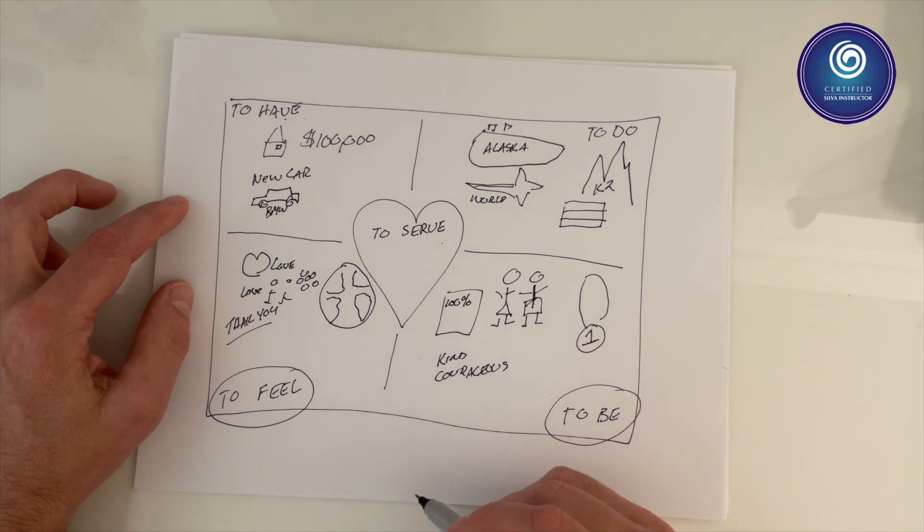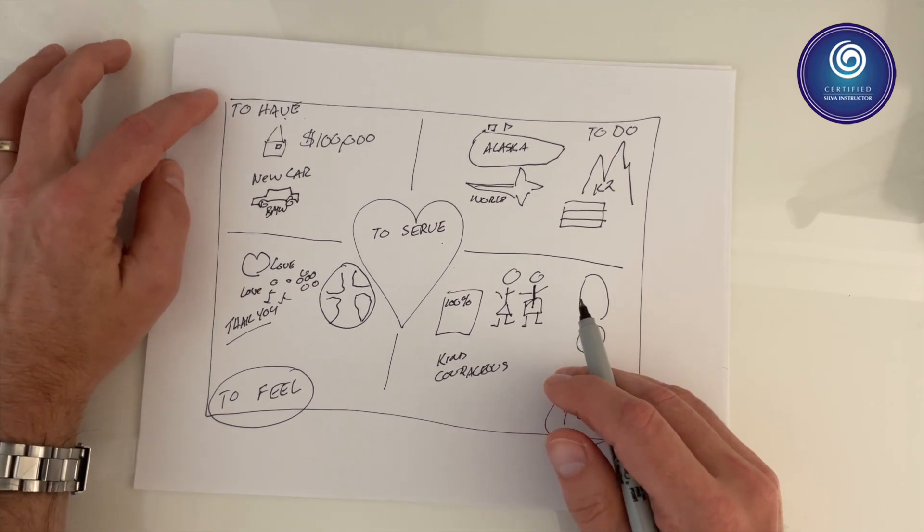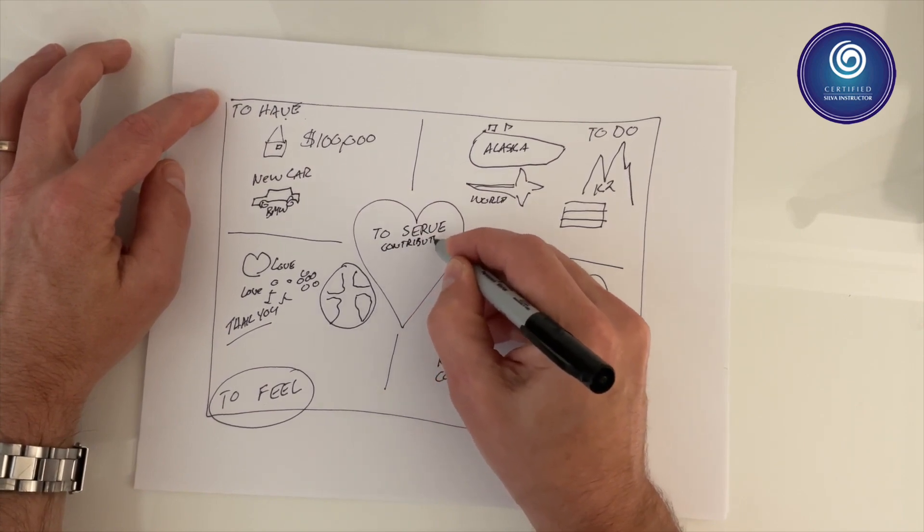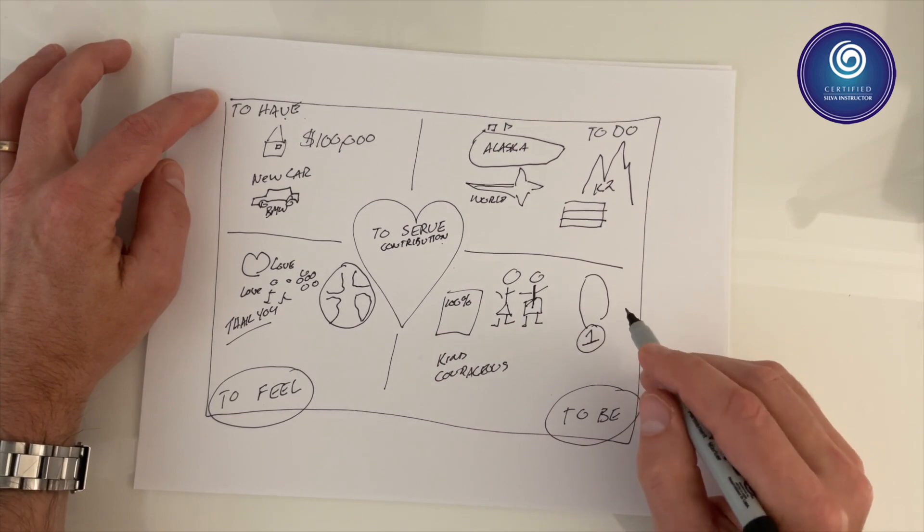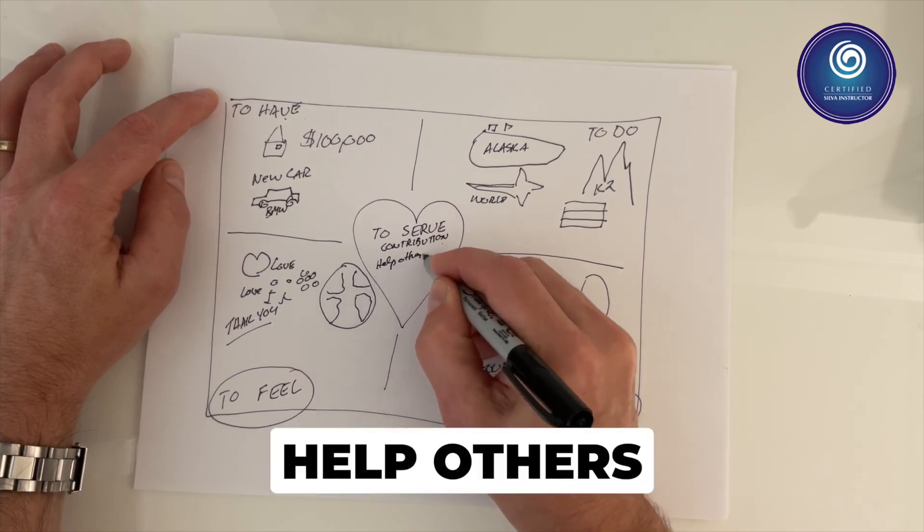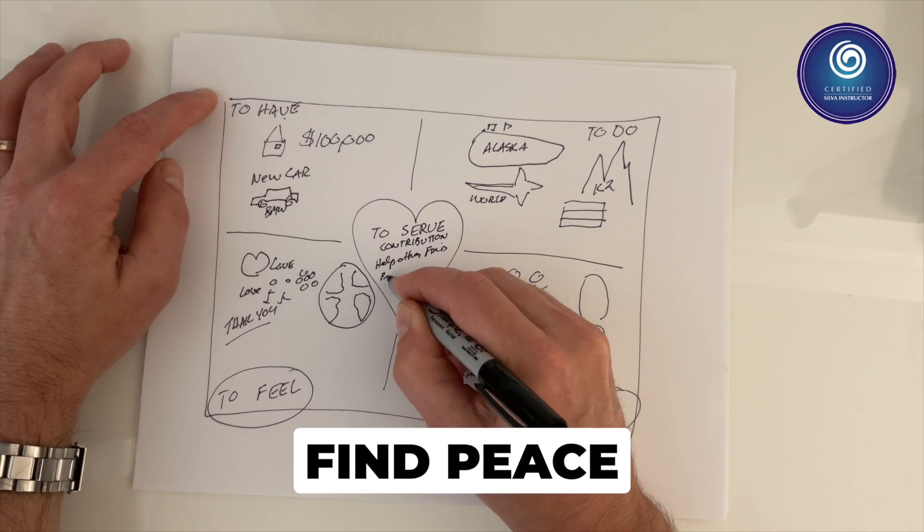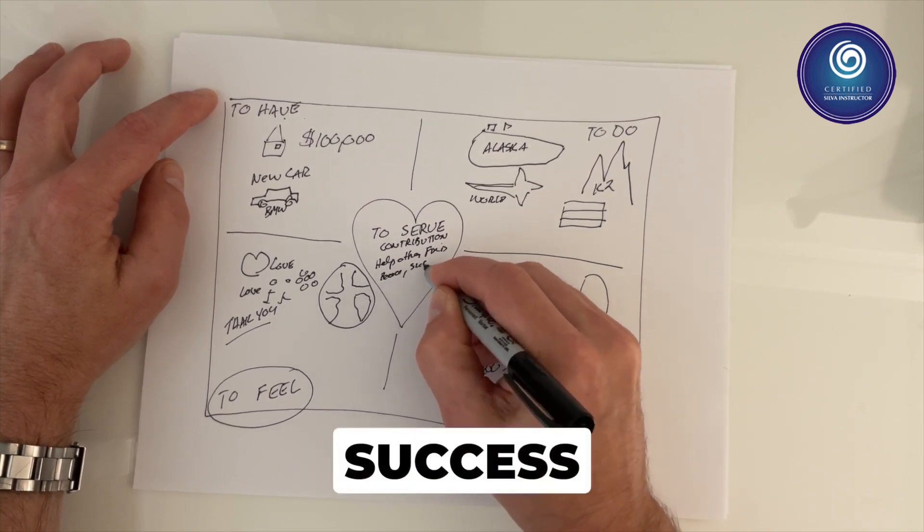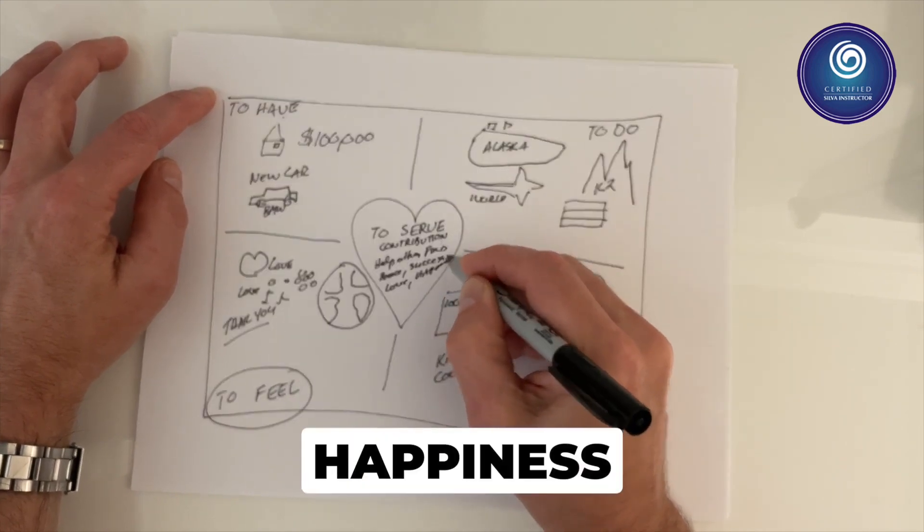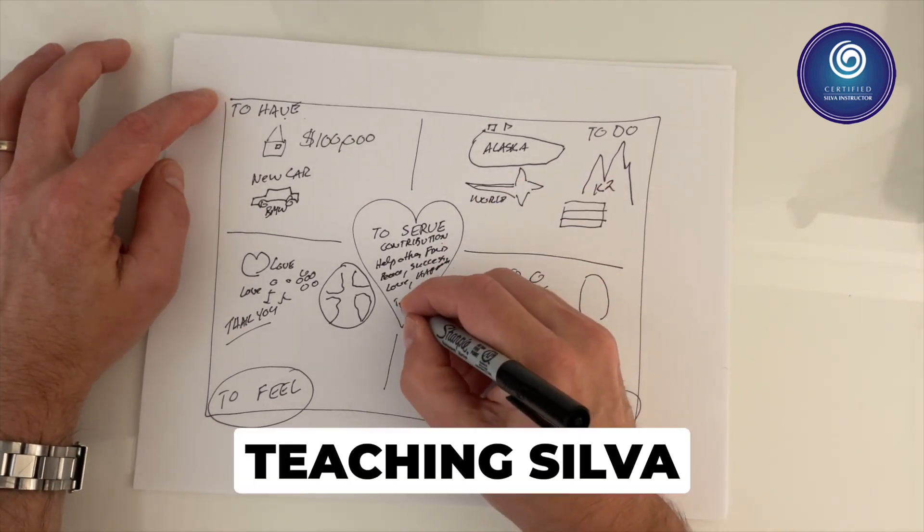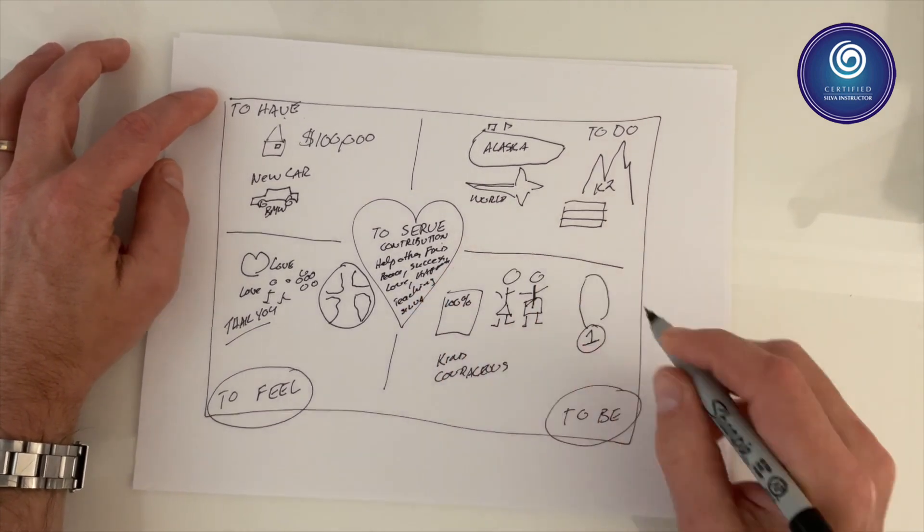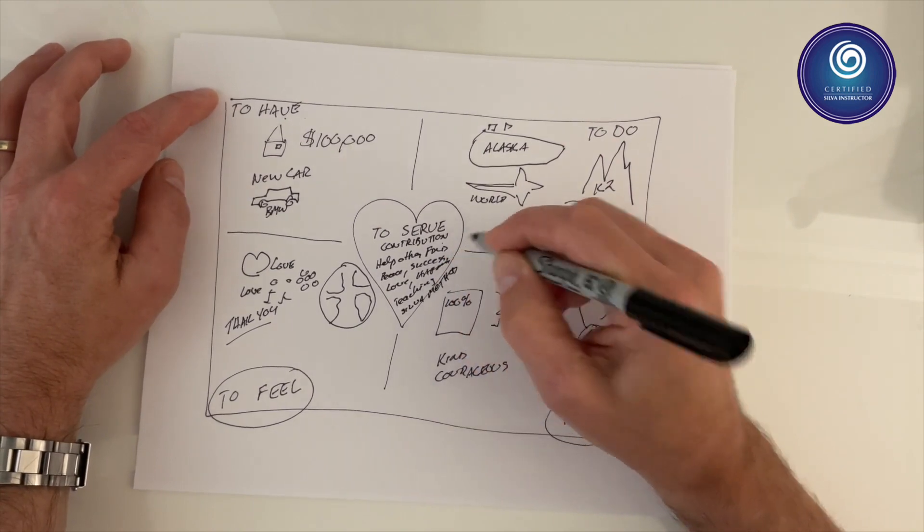And in the center write down the things that you want and how you're going to serve the world and others. Serving or contribution - what types of contribution are you making for this world? I can say here: help others find peace, success, love, happiness. How else to serve? I'm serving by teaching Silva, the Silva method, and so forth.